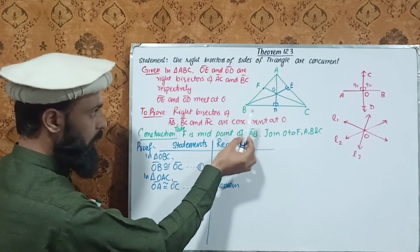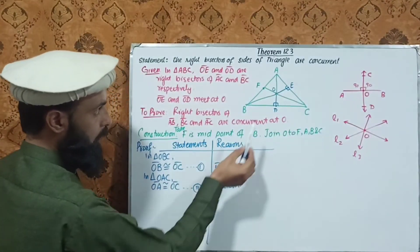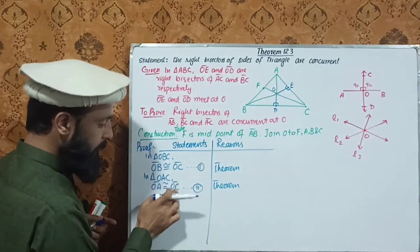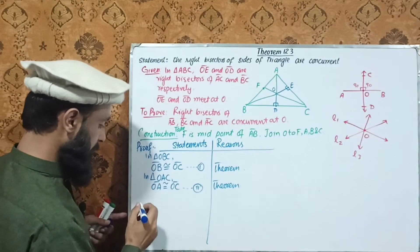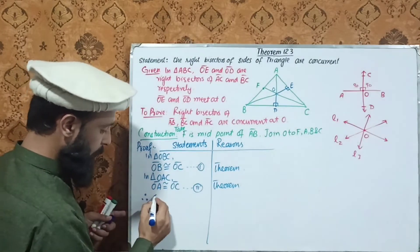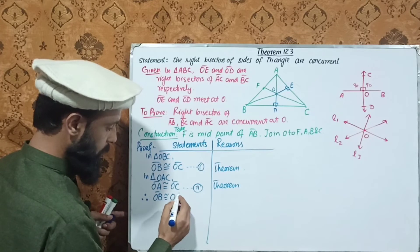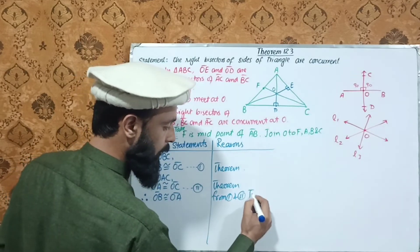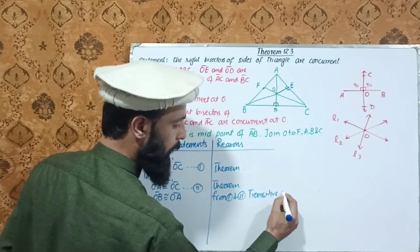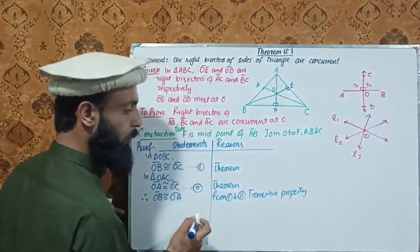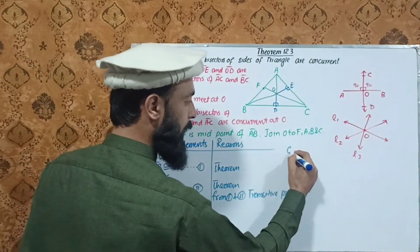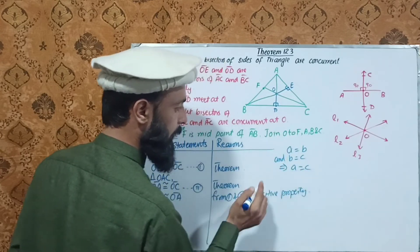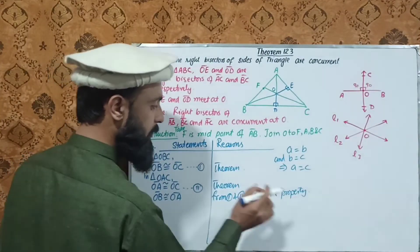The reason: OB equals OC from triangle OBC, and OA equals OC from triangle OAC. Since OB equals OC and OA equals OC, by the transitive property, OA equals OB. This implies OA equals OB equals OC.